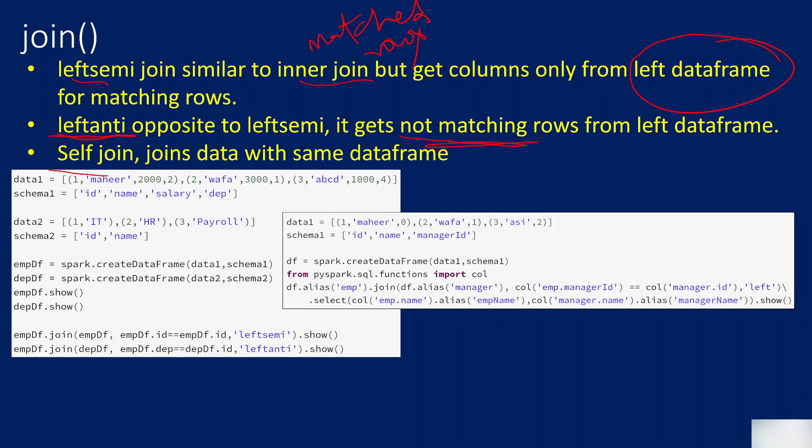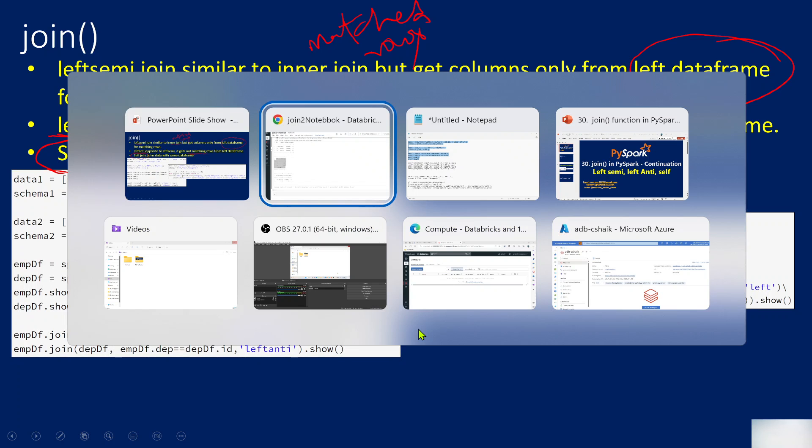Now let's understand another thing: self join. This is a very important concept — in SQL as well you might have seen many self join examples. It is very similar to that. Your data frame joins with the same data frame. Let's assume you have an employee data frame and you are joining it again with the employee data frame — that is called a self join. Let me practically show you in which scenarios this kind of requirement will come.